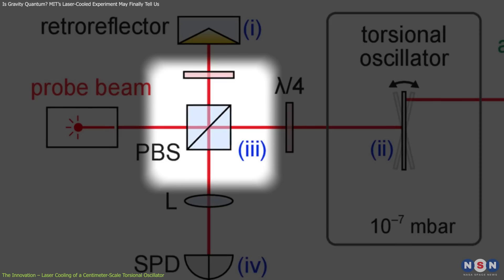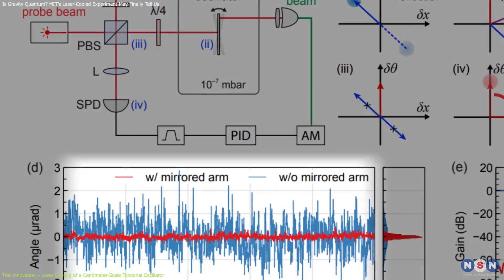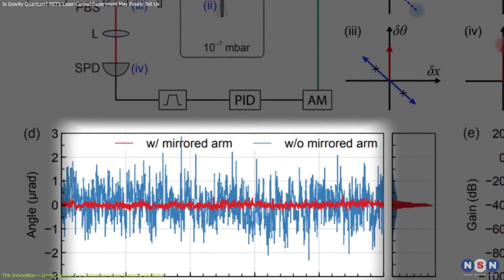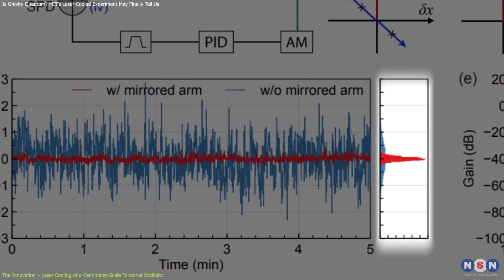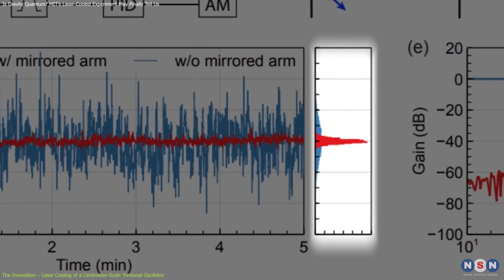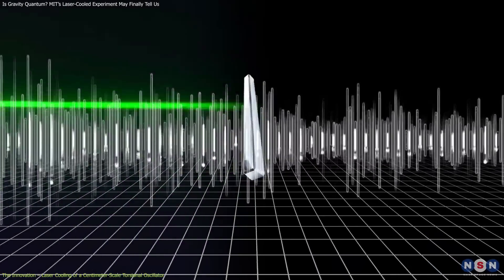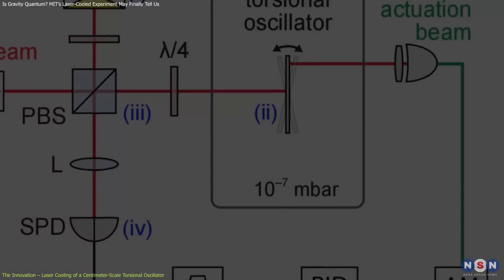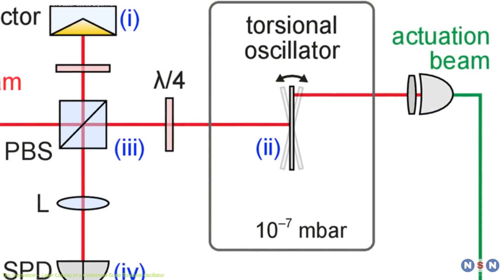A second, mirrored version of the laser beam that reflected off a corner cube mirror. This beam picked up the same jitter, but crucially, not the motion of the oscillator. When the two beams were recombined, the noise was cancelled out, leaving only the real signal. This brought the noise down by a factor of a thousand.